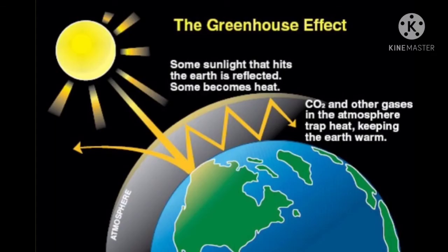Now we'll try to understand the concept of greenhouse effect on a larger scale. Our earth is covered by the atmospheric layer, and this atmospheric layer is acting as a greenhouse. There are some gases in the atmosphere like carbon dioxide, methane, and ozone which are called greenhouse gases. They trap solar rays and do not allow them to percolate back to space, due to which the heat of the earth is maintained. This is the global greenhouse effect.